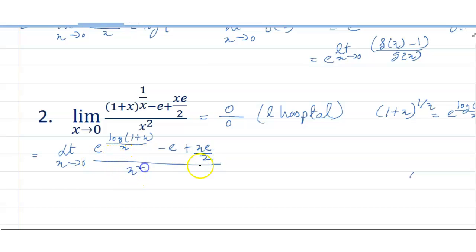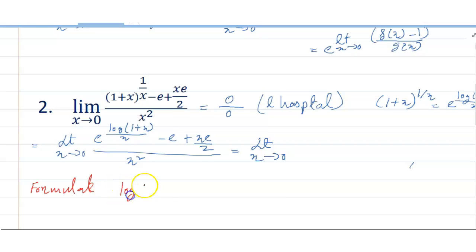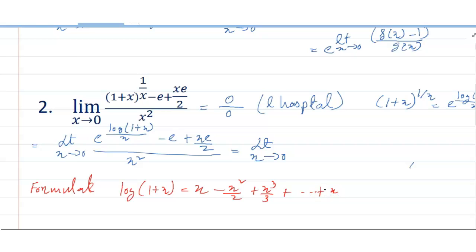Divided by x squared equals limit x tends to 0 of (1 plus x). Friends, we need to know one formula. The formula is: log(1 plus x) equals x minus x squared by 2 plus x cubed by 3, and so on up to infinity. I apply this formula here.